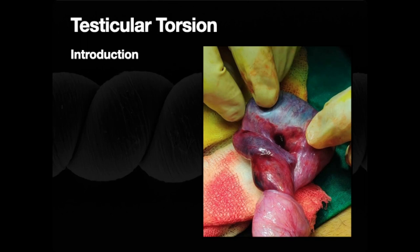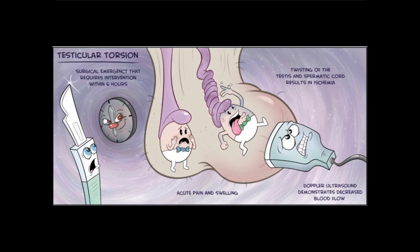There are two ways to categorize torsion: intravaginal or extravaginal, related to the tissue layers surrounding the testicle. Salvage rate is really good if you detorse within six hours. But as time goes by — time is testicle, just like time is brain or time is heart — the salvage rate goes down. Some sources suggest salvage rate is approximately 20% after 12 hours of symptom onset, with caveats around persistent versus intermittent symptoms. The longer you leave this, the less optimal the outcomes.